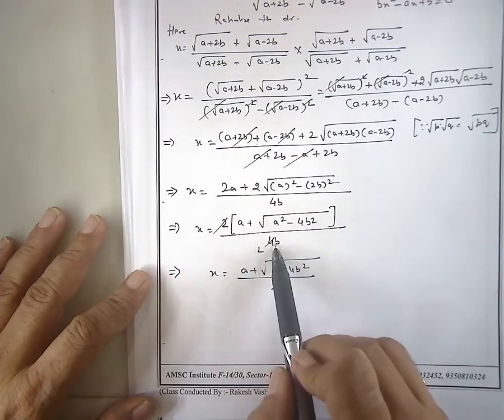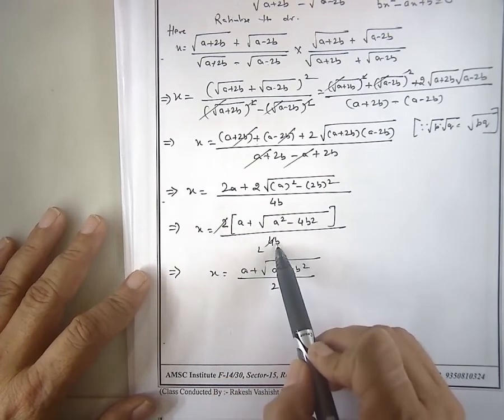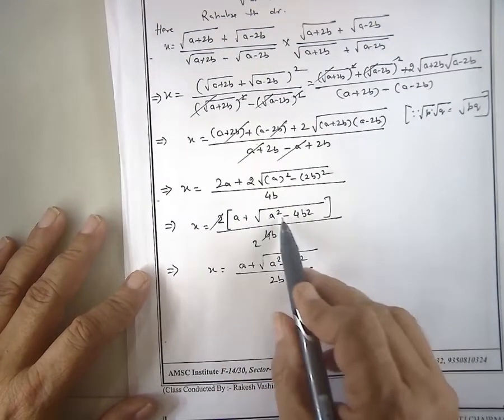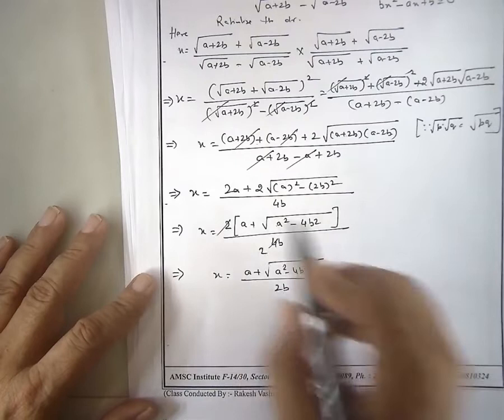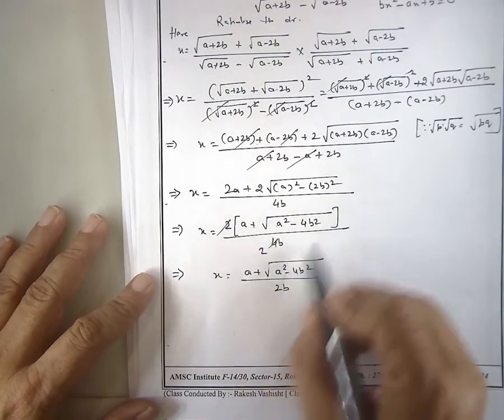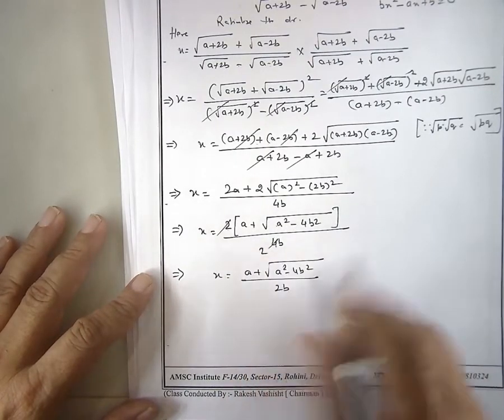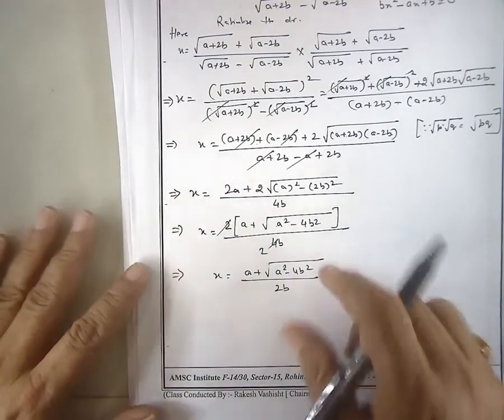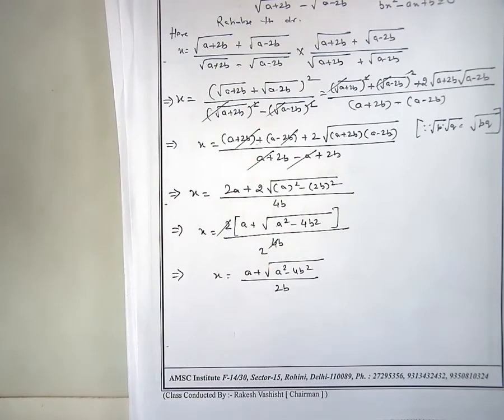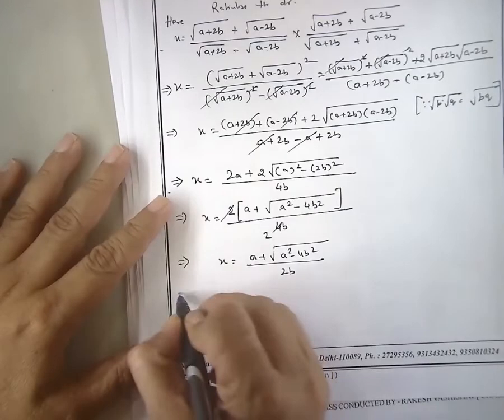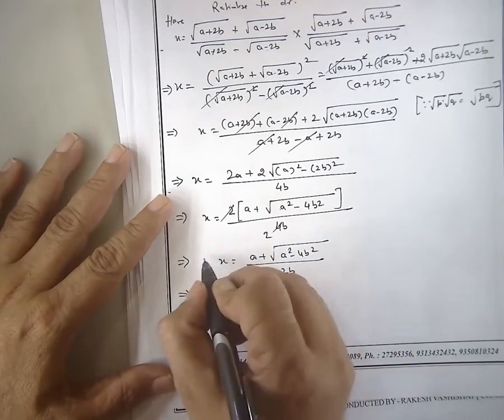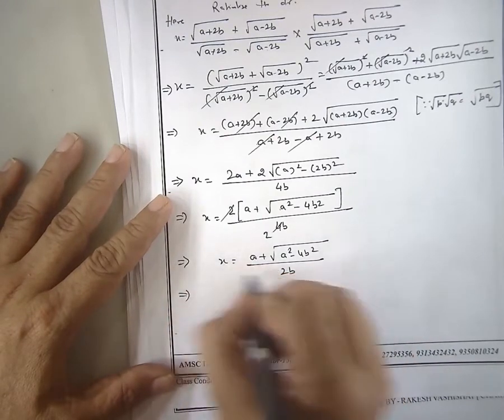A plus a squared minus 4b squared divided by 4b. Now cross-multiply. 2bx times 2bx equals 1 into this.